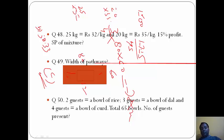Question 50: 2 guests get a bowl of rice, 3 guests get a bowl of dal, and 4 guests get a bowl of curd. Total 65 bowls. We will calculate and get the total number of guests presented. The answer is D, that is 60.